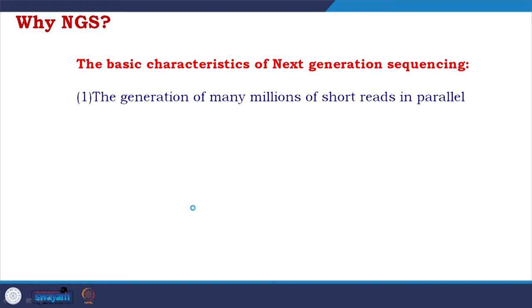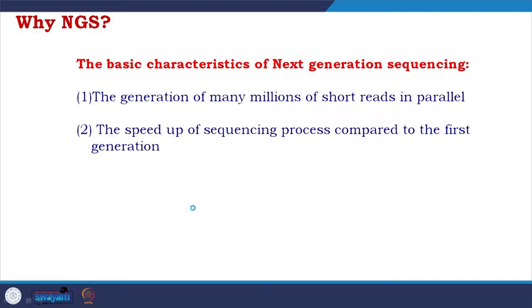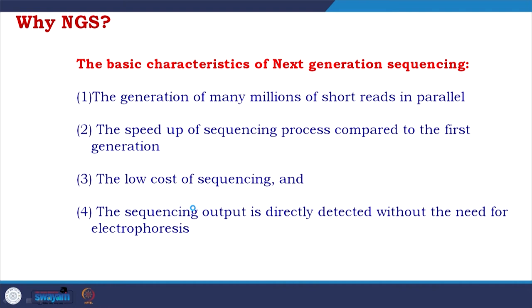The basic characteristics of next generation sequencing are: generation of many millions of short reads in parallel — instead of one Sanger reaction, if you perform 1,000 in parallel it is much better; a speed-up compared to first-generation sequencing (Maxim-Gilbert and Sanger); lower cost; and sequencing output that is directly detected without the need for electrophoresis, requiring automation and direct reading.